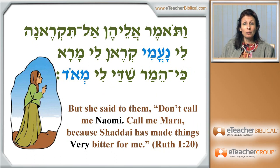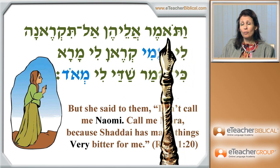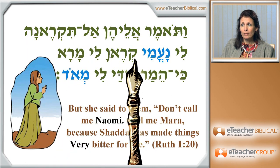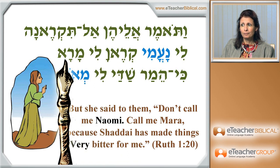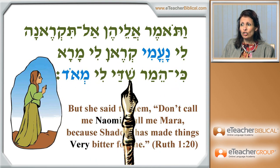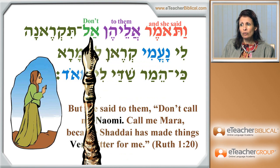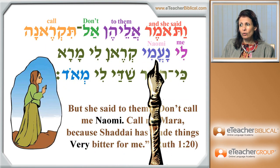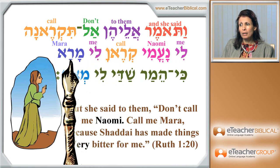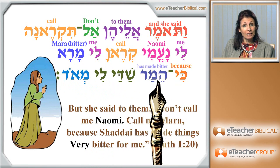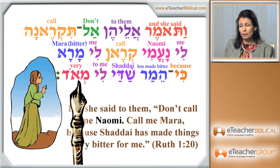Now Naomi is replying to the women in the city. She tells them: 'Don't call me Naomi. Call me Mara — bitter. Because Shaddai made it very bitter to me.' I went in literal order just for you to be able to follow along with the literal translation.